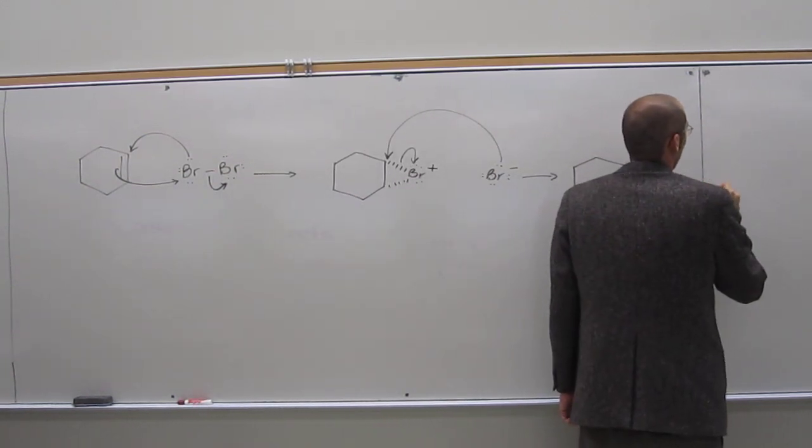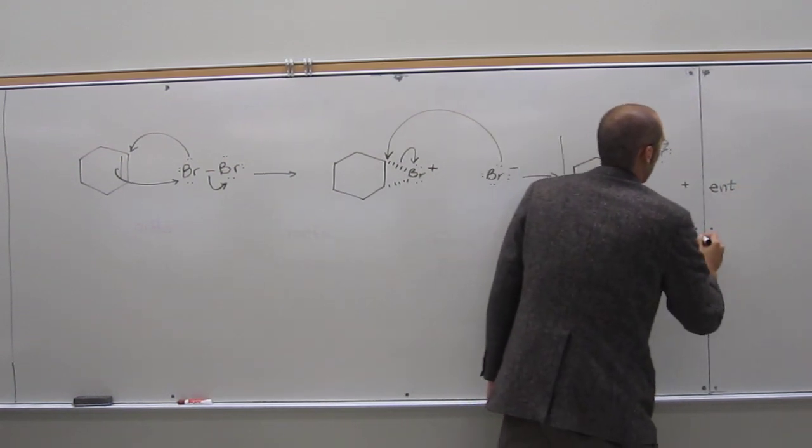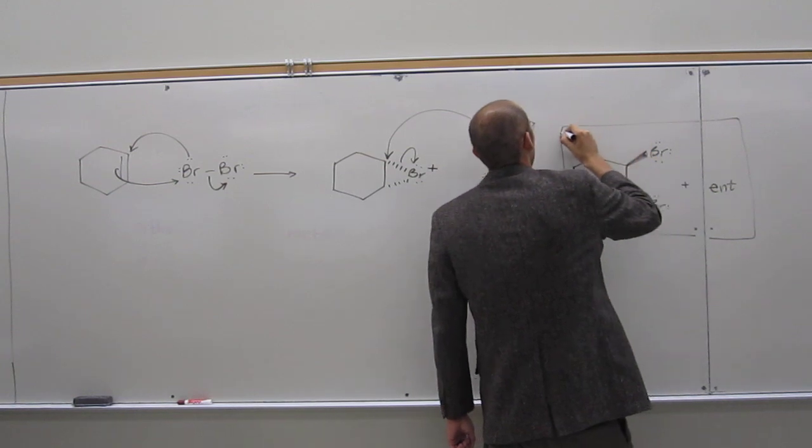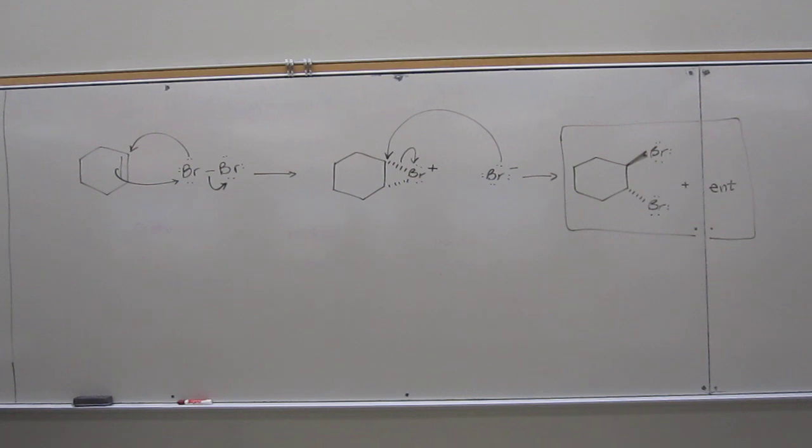And when we do that, we just don't know. So the product is actually a racemic mixture, okay? So when we react cyclohexene with bromine, it reacts. That's the whole point, right?